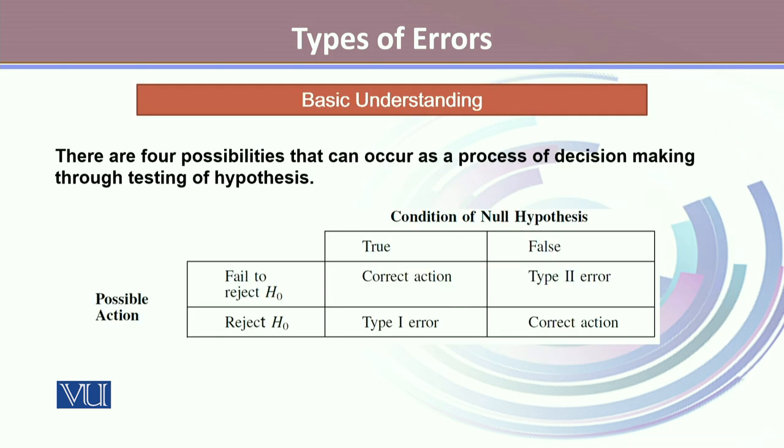There are four possibilities that can occur in the process of decision-making. Either you make a right decision that H0 is true and you fail to reject H0, or H0 is false and you reject it.